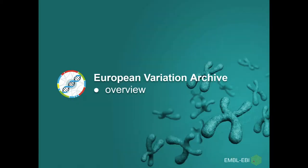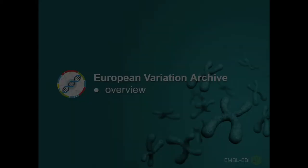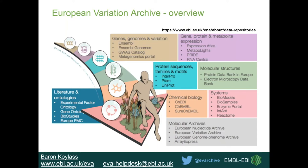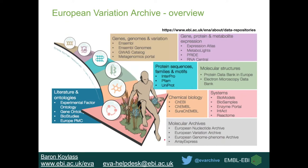Moving into the overview of the European Variation Archive: the EVA is a database for genomic variants from any type of species, and we reside in the European Bioinformatics Institute in the Molecular Archives cluster. All the data in the EBI is split up into specific clusters depending on what the data is comprised of.